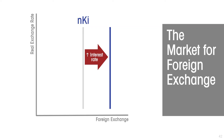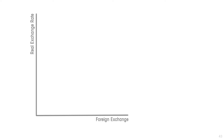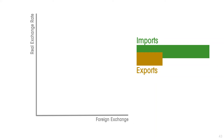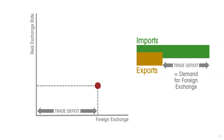We now need to capture the foreign exchange flows that are due to international trade. The net demand for foreign exchange for the purposes of international trade is the excess of imports over exports — the trade deficit. To see what the trade deficit curve is going to look like, we start with the current trade deficit and the current real exchange rate, and we suppose that there's an increase in the real exchange rate. How does that affect the net demand for foreign exchange for trade purposes?